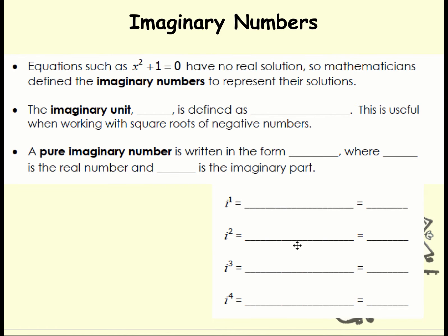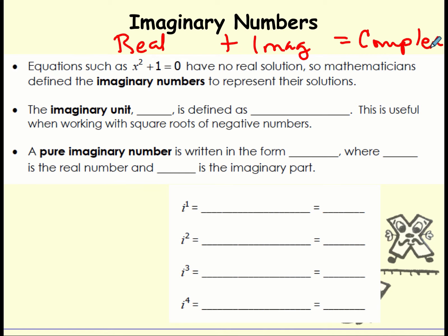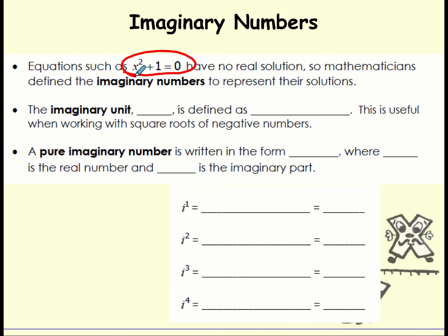There is a number that exists — numbers you may not have discussed in other classes — called imaginary numbers. Imaginary numbers are part of what we call the complex number system. We have real numbers, which you've been using up until now, plus the imaginary, and together they make a complex system. The word imaginary is a bit of a misnomer because they are just as real as real numbers. The imaginary unit is represented by the letter i, defined as the square root of negative 1 equals i.